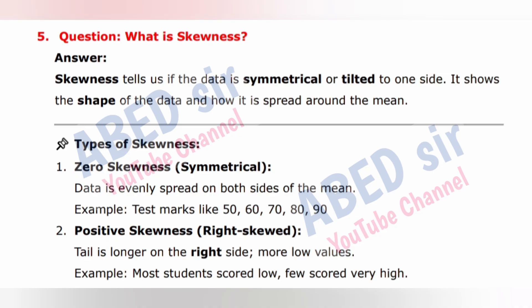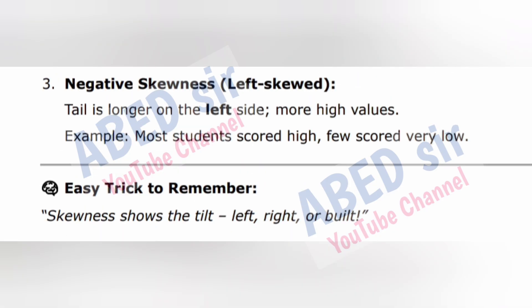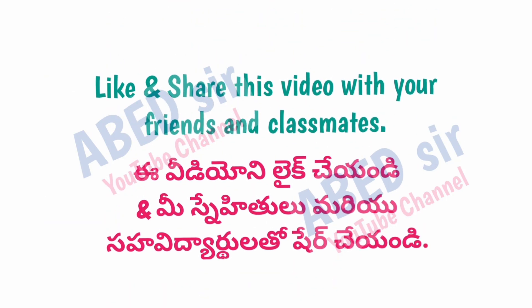2. Positive skewness (right skewed) — tail is longer on the right side, more low values. Example: most students scored low, few scored very high. 3. Negative skewness (left skewed) — tail is longer on the left side, more high values. Example: most students scored high, few scored very low. Easy trick: Skewness shows the tilt — left, right, or built.